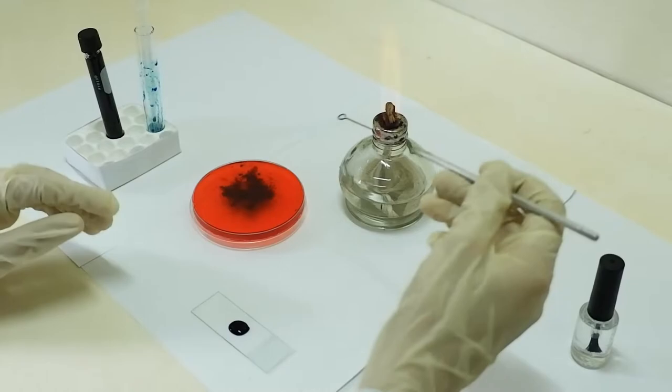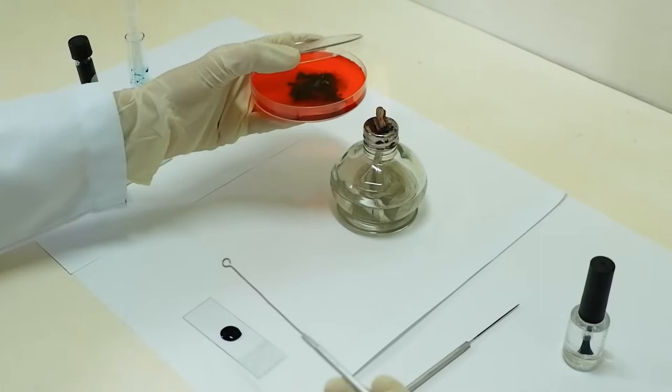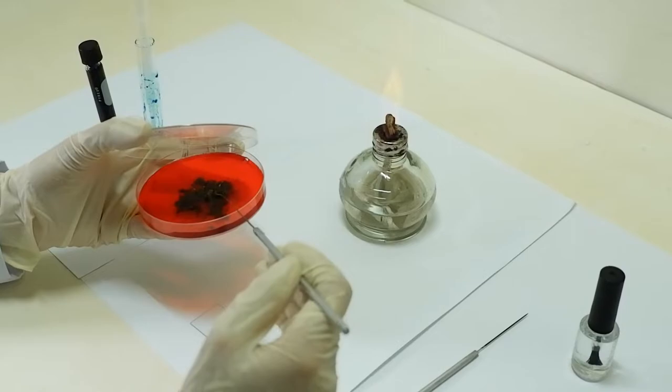With a flamed and cooled stiff wire inoculating needle, pick up a small portion of your fungal colony, cutting through the aerial and vegetative mycelium. Take note that you must not take the center or the edge of the colony.